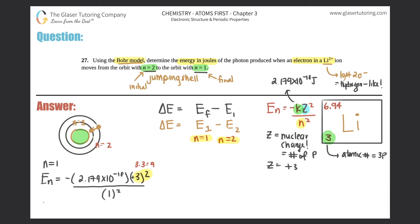Let's do the first one for n equals 1. So e to the first equals negative 2.179 times 10 to the negative 18th times our z was 3, squared, all over 1 squared. 1 squared is just 1, so anything divided by 1 is the same number. And 3 squared is 9.